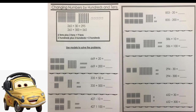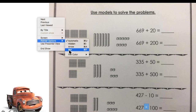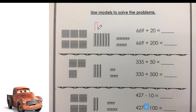Now, we're going to work with this worksheet. Open it up. If you want to work alone and complete it and then check your answers, you can do that. I'm going to give you the answers now. 669 plus 20. We are adding 20. I will draw two tens. The hundreds stays the same. The tens will change — they will not be six, they will be eight. And ones stay the same, they will be nine.